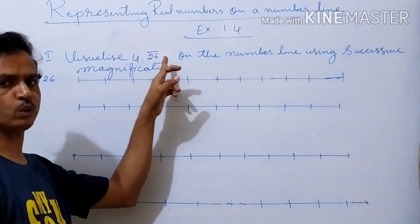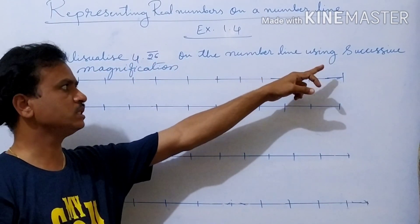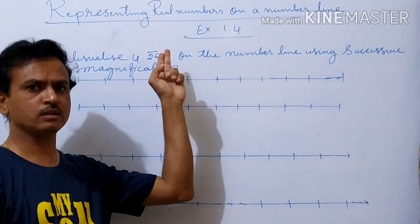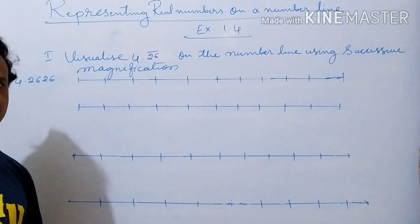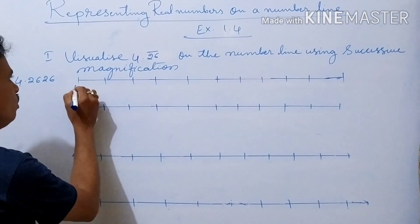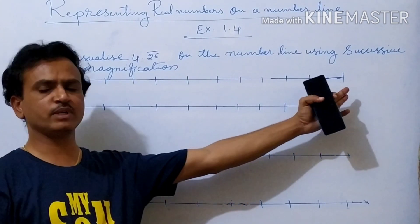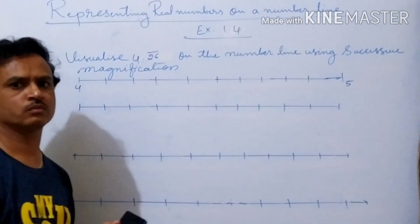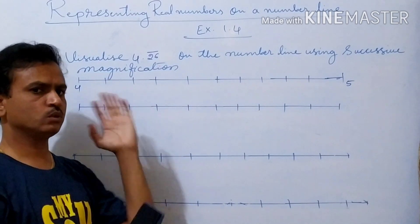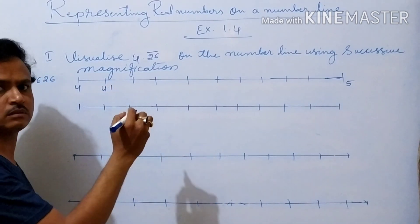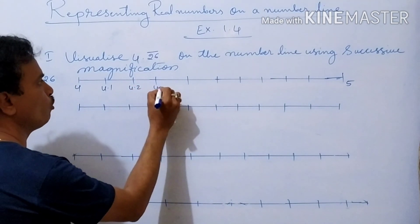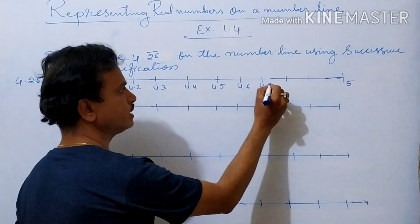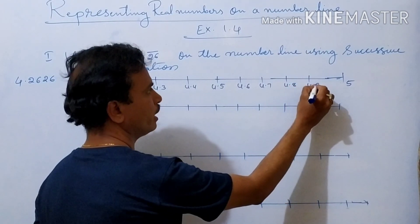Visualize 4.26̄ on the number line using successive magnification. Here over 2 digits a bar is given, so that can be written as 4.2626. So here 4 is there. First, take a 10 cm line. Then 4 to 5: your last point is 5. There are 10 parts. After 4, take 4.1, 4.2, 4.3, 4.4, 4.5, 4.6, 4.7, 4.8, 4.9, then 5.